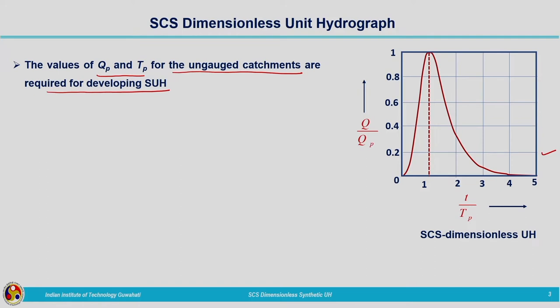This is the dimensionless synthetic unit hydrograph provided by SCS. Along the y-axis we have Q divided by QP, and along the x-axis T divided by TP — since it is a dimensionless number. When it reaches the peak value, the ordinate value is 1, because at the peak Q equals QP, so QP/QP = 1. Along the x-axis, the value corresponding to peak discharge is also 1, since TP/TP = 1.